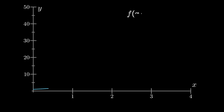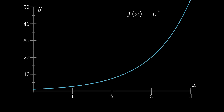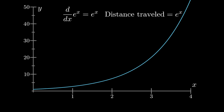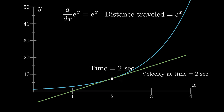Now let's turn our approach to the exponential function. In calculus, e to the x is a very special function because its derivative equals itself. The derivative of a function at some point describes how the function changes at that point. For example, if we have a car traveling in a straight line and a function describing distance, the derivative at time equals 2 seconds gives the velocity at that moment. So when we say the derivative of e to the x is e to the x, that means its rate of change at any point equals e to the x.